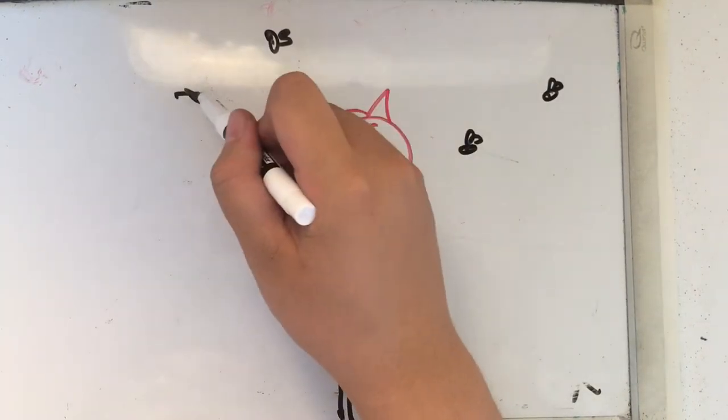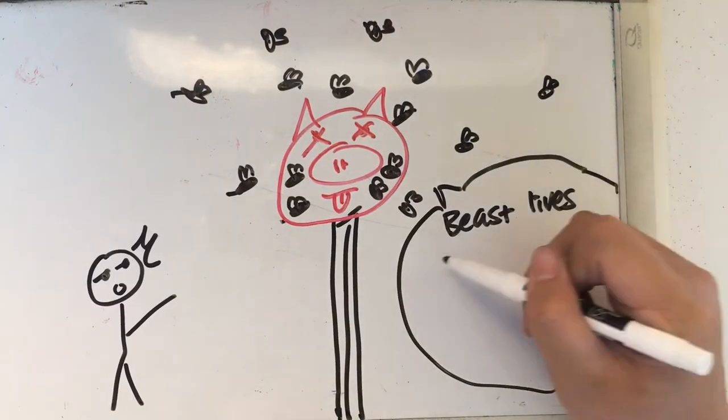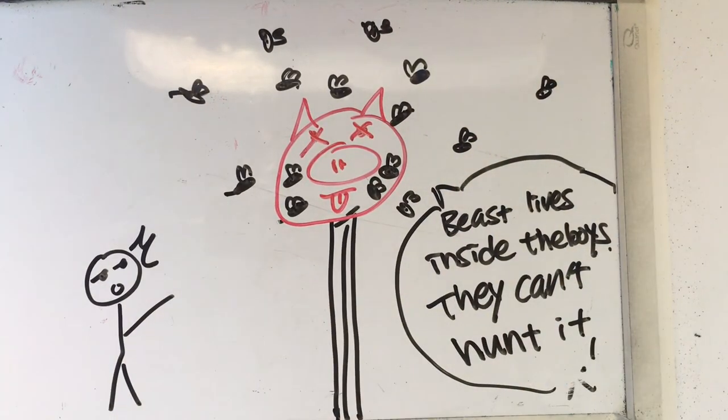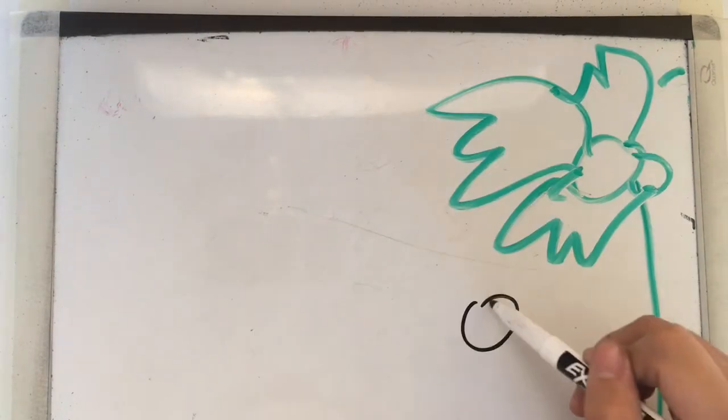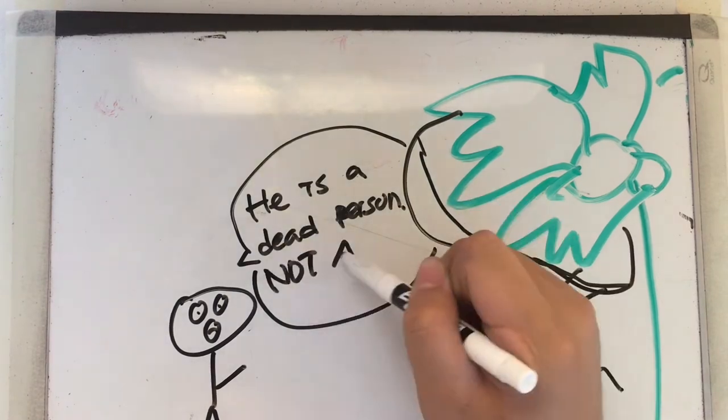Simon, who often walks off by himself, hallucinates the head, also known as the Lord of the Flies. The head laughs as he tells Simon that the beast lives inside the boys and is not something they can hunt. Simon goes to the mountain and finds out the truth of the dead pilot.